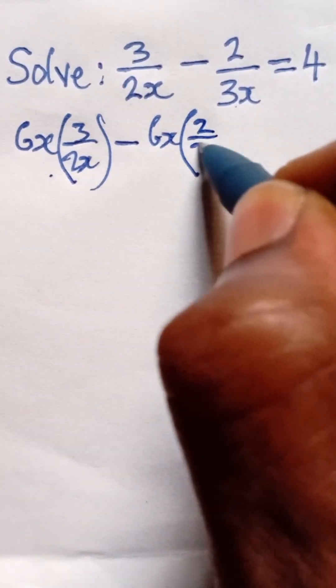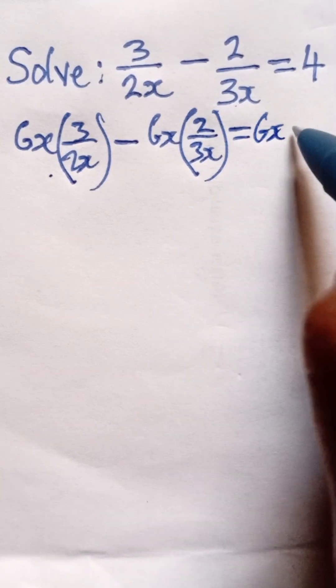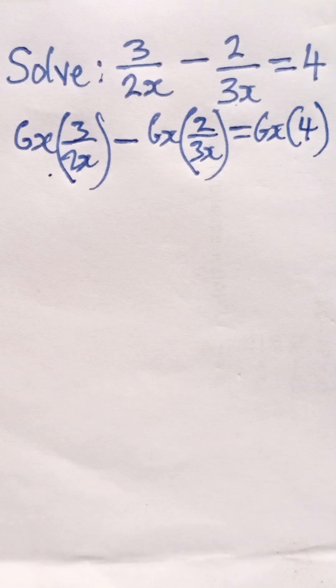second term, which is 2 over 3x, and then finally equals 6x multiplied by 4.